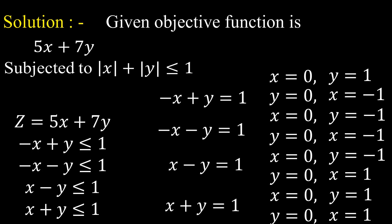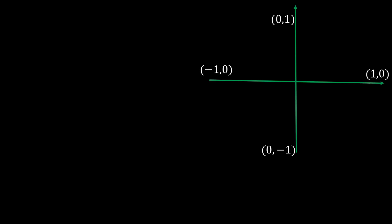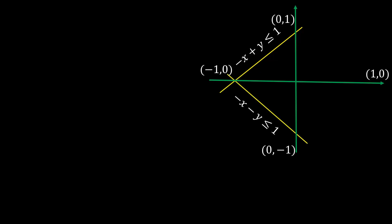Now we plot these points on the xy-plane. The points are (0, 1), (−1, 0), (0, −1), and (1, 0). Join the point (−1, 0) with (0, 1) — this corresponds to the constraint −x + y ≤ 1. Join (−1, 0) with (0, −1) — this corresponds to −x − y ≤ 1. Join (0, −1) with (1, 0) — this corresponds to x − y ≤ 1. Join (0, 1) with (1, 0) — this corresponds to x + y ≤ 1.